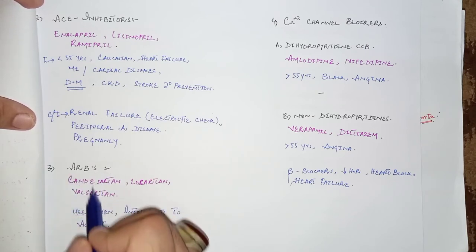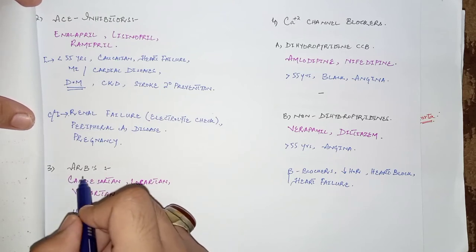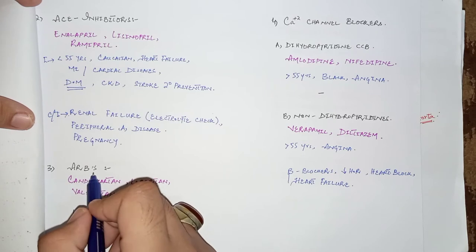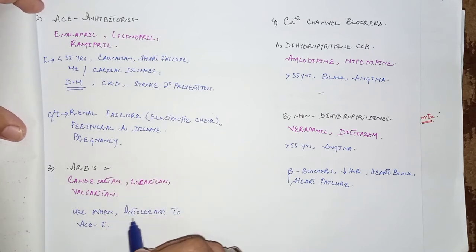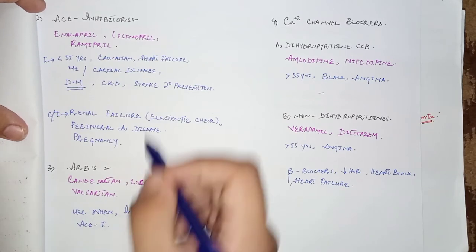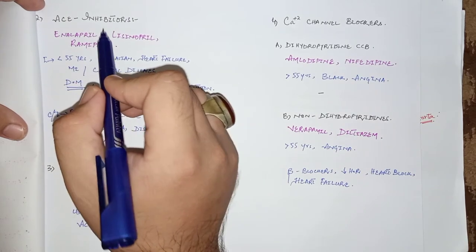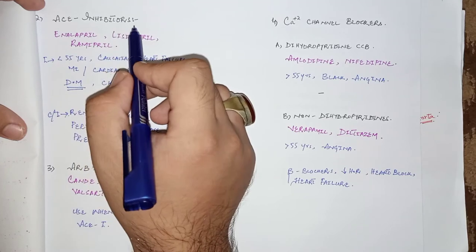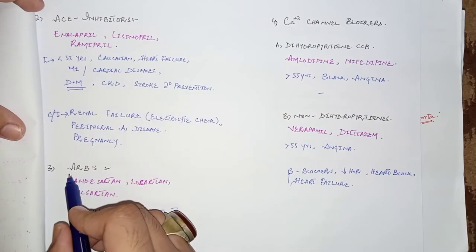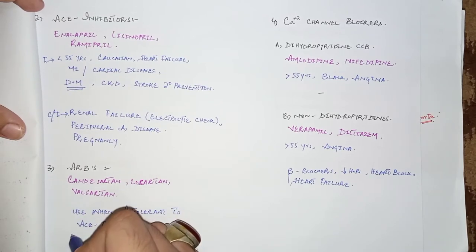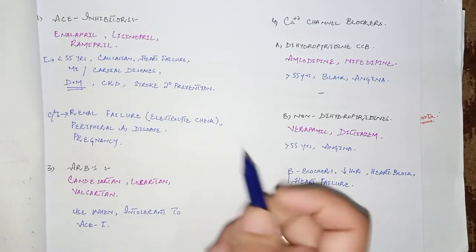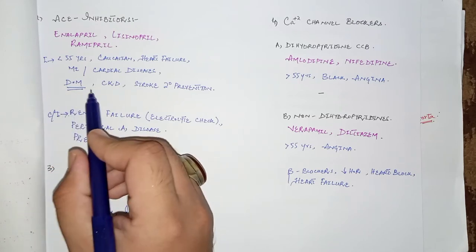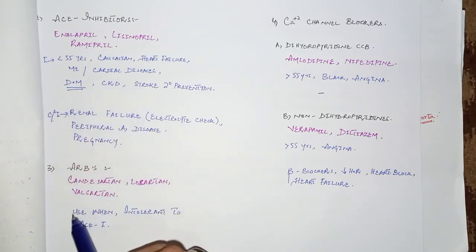The next class is angiotensin receptor blockers (ARBs), which include candesartan, losartan, and valsartan. ARBs are direct inhibitors of angiotensin II, so the mechanism is almost the same as ACE inhibitors. However, ARBs are used when patients are intolerant to ACE inhibitors due to the side effect of dry cough. ARBs have replaced ACE inhibitors in such cases, with almost the same indications and contraindications.